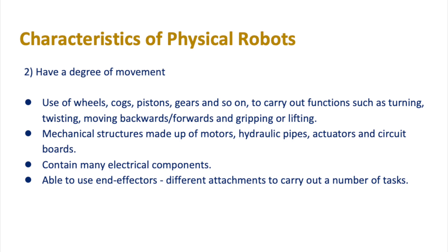Mechanical structures made up of motors, hydraulic pipes, actuators and circuit boards are all combined to allow a robot to move. They also contain many electrical components. Robots also need to be able to use end effectors — different attachments that can be fixed to a robot arm to allow it to carry out various tasks, such as a crane-type attachment for lifting or a drill-type attachment for drilling through a wall. Make sure you know the term end effector, as it could appear in an exam question — it's basically an accessory attached to a robot to allow it to do a different task.